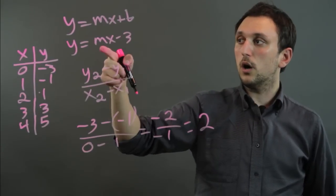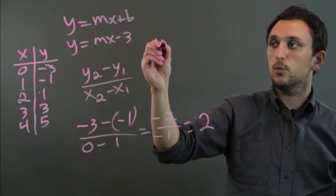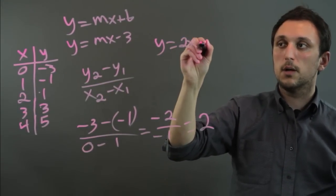So our m value equals 2. So our final equation is y equals 2x minus 3.